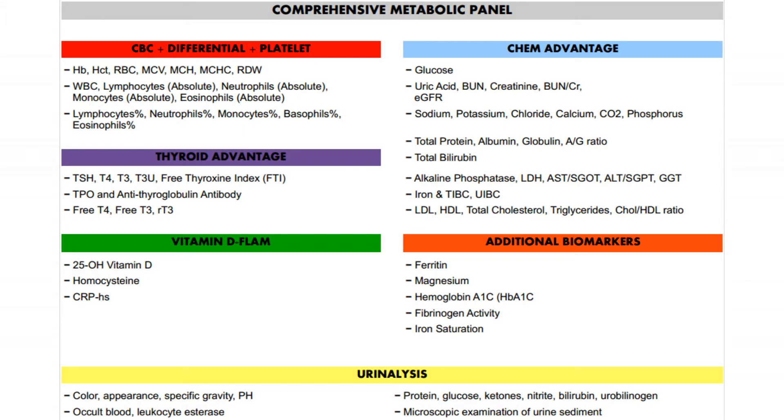It also includes a urinalysis, which provides further information to aid in the assessment of the blood chemistry results. On your screen you'll see a list of the tests included. You can also view or download the list from my website. In addition to reviewing your lab work for out-of-range markers, it will also be reviewed using our functional health analysis, which is included in the cost of this panel.